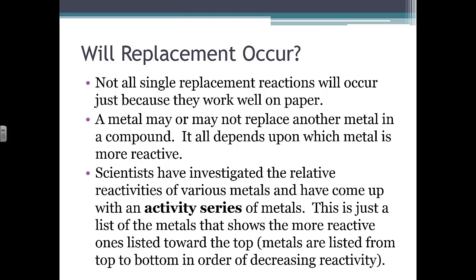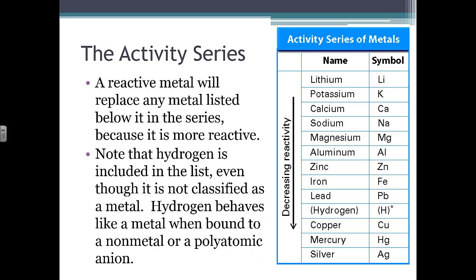Single replacement reactions are the third type. They involve an elemental reactant displacing an element from a compound, forming two new products: a new elemental substance and a new compound. In this reaction, we start with an element A and a compound BX. The A displaces B from the compound, so we end up with compound AX and element B as our products.